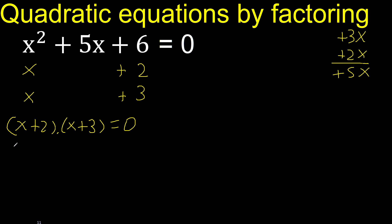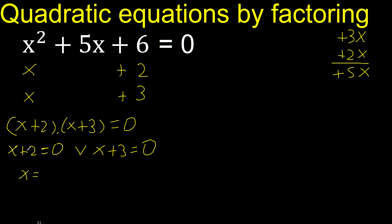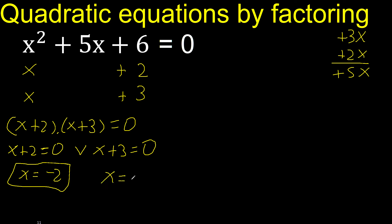Therefore this factor equal 0, or this factor equal 0. Plus 2 here — therefore change the sign: minus 2, finish. Here plus 3 — minus 3, finish.